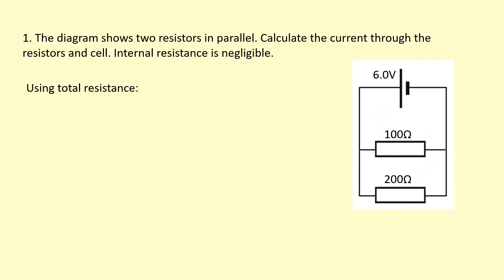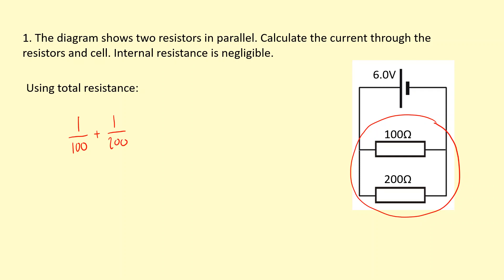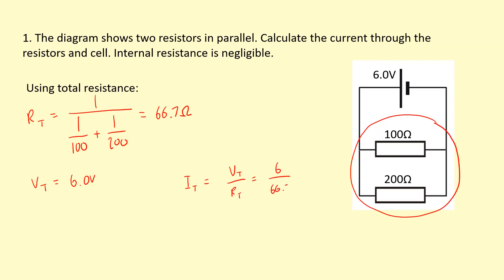There's another way I can work out the total current through the cell. That's not by applying Ohm's law to the individual resistors, but to the circuit as a whole. So I'm going to work out the resistance of this combination. Because they're in parallel: 1 over 100 plus 1 over 200, then 1 over that whole thing to get the total resistance. That gives me 66.7 ohms. The total voltage across all components is 6 volts, so the total current equals the total voltage over the total resistance: 6 over 66.7. You'll get the same answer as before, 0.09 amps flowing through the cell itself.